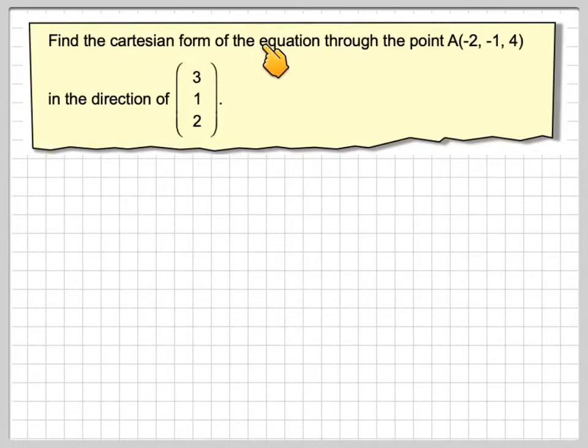Find the Cartesian form of the equation through the point A(-2, -1, 4) in the direction of (3, 1, 2).